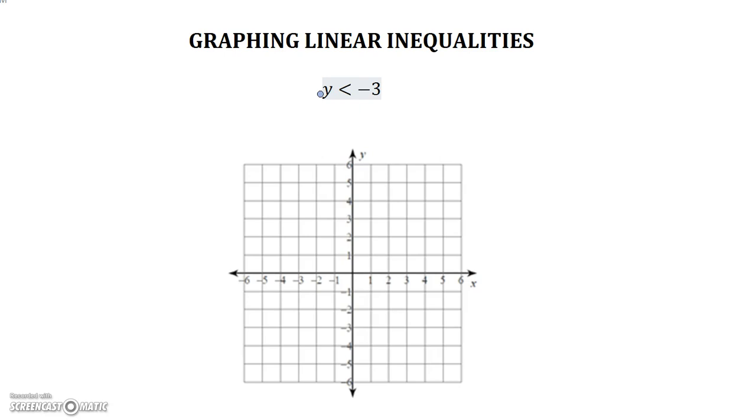Okay. Our inequality is y is less than negative 3. So we know on the y-axis, it's going to be negative 3 and it's going to be horizontal. Now our inequality sign, less than, tells us that our line is going to be dotted. Our last step is to figure out where to shade. y is less than negative 3, so we're going to shade the numbers that are less than negative 3. We're shading down.